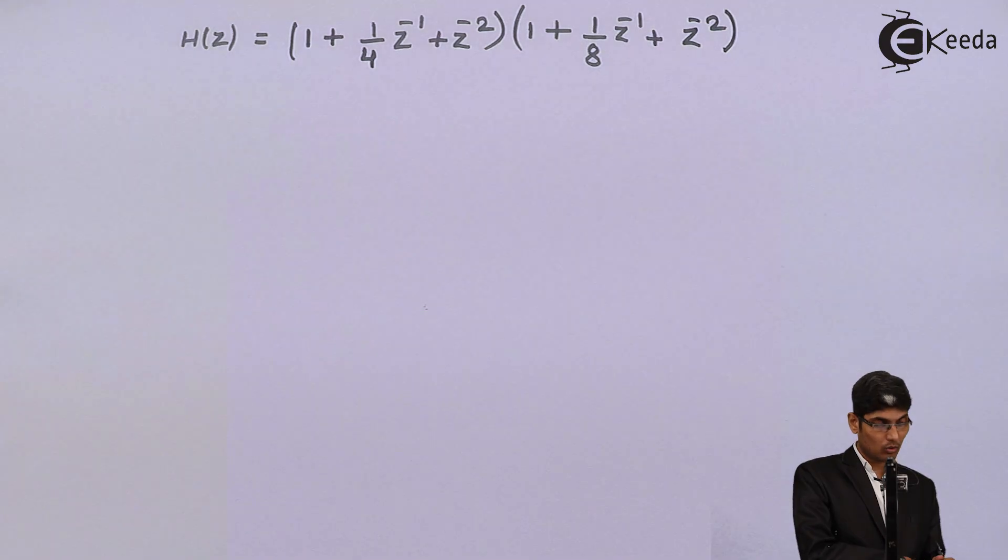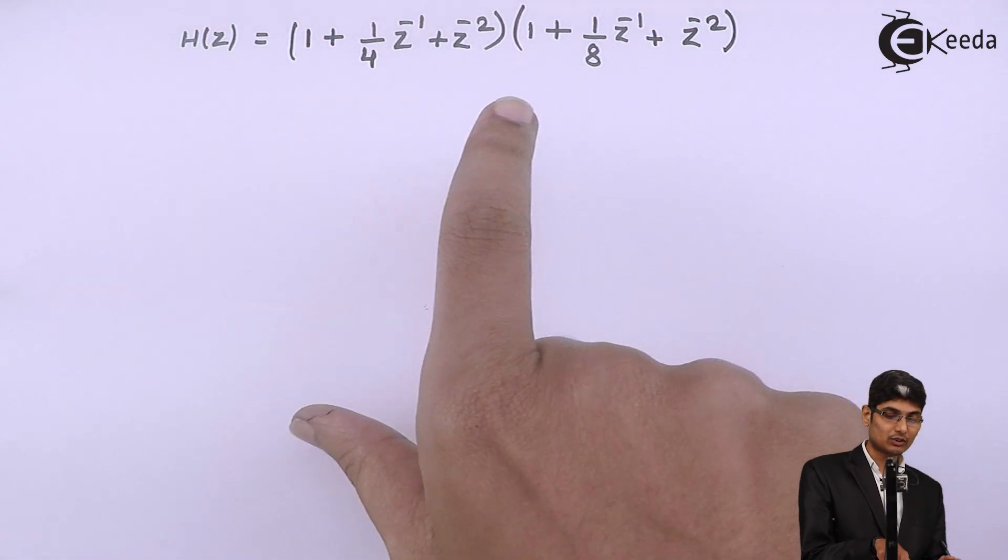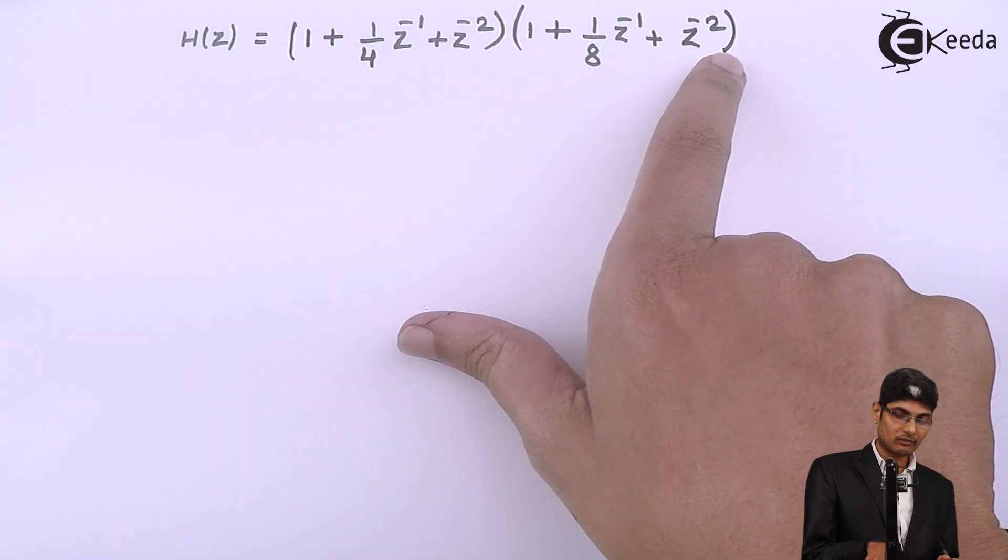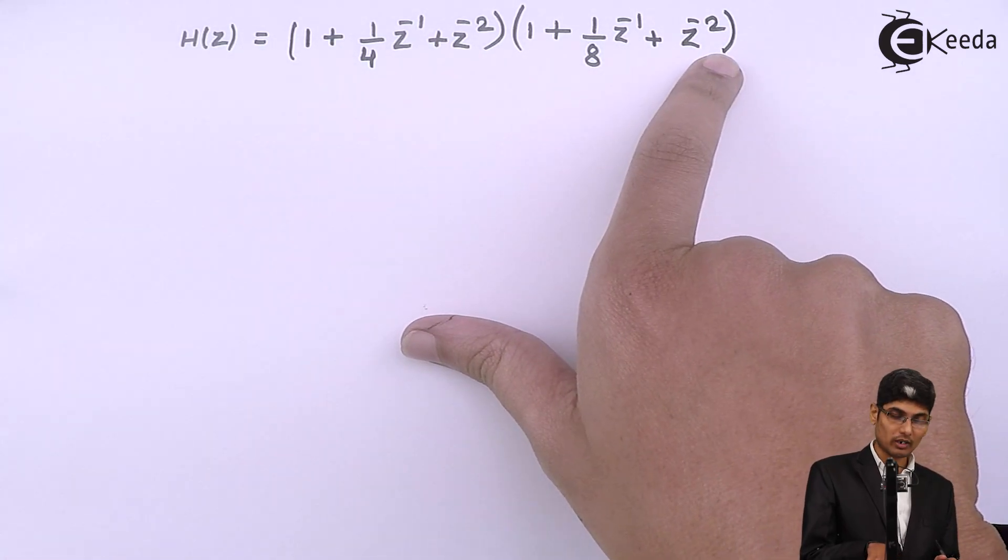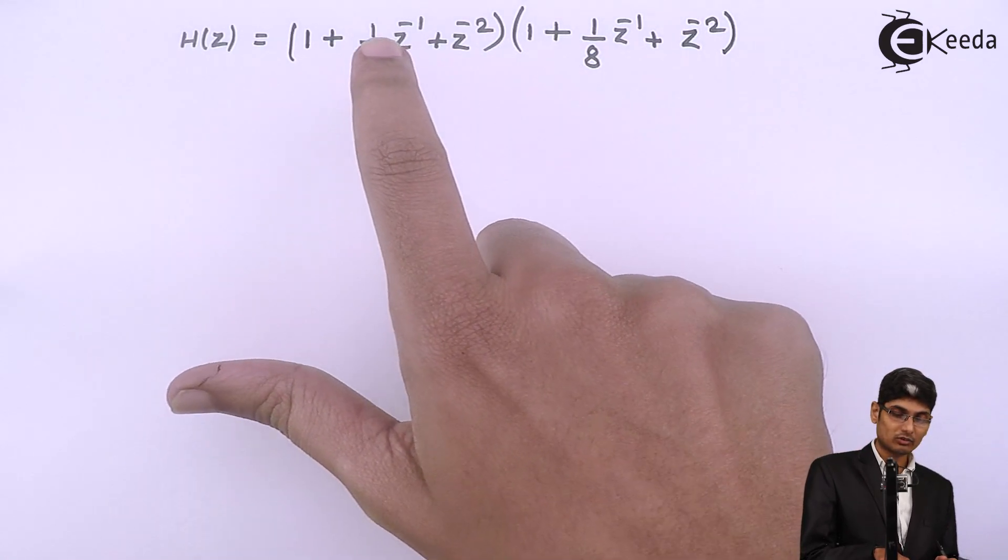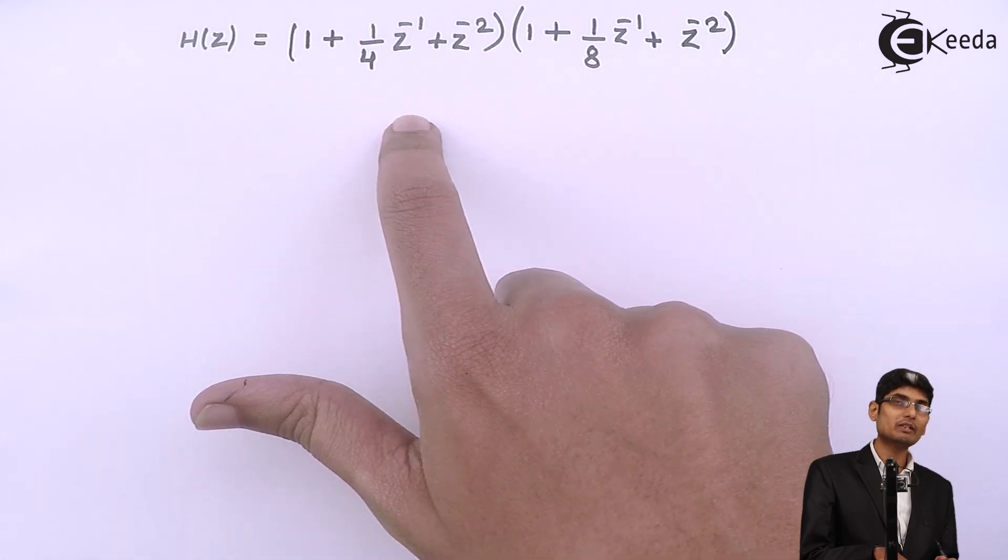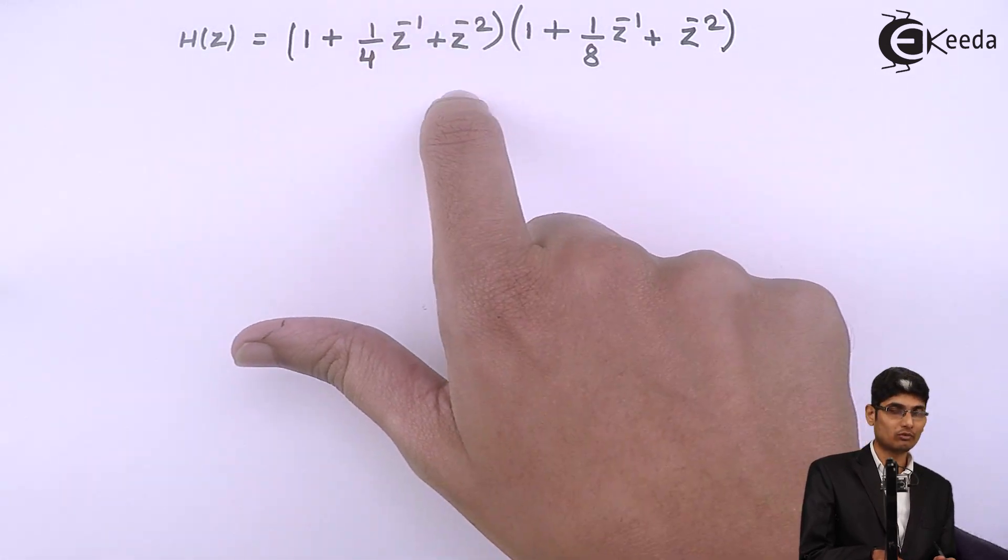Now if we go along with the direct form, we have to multiply each term and the highest degree that we're going to get is Z raised to minus 4 and there will be four terms: Z to minus 1, minus 2, minus 3, and minus 4.